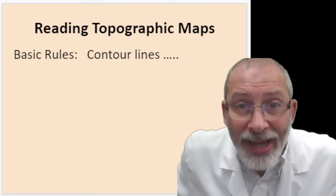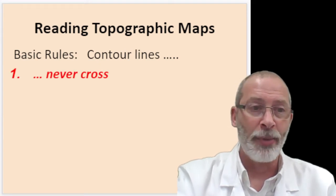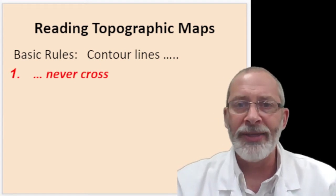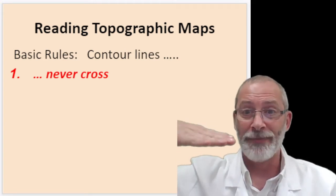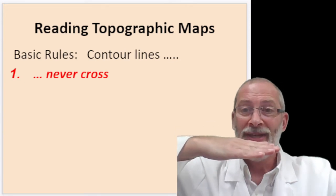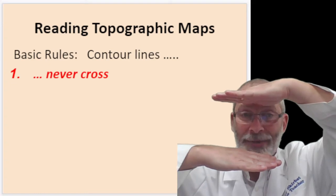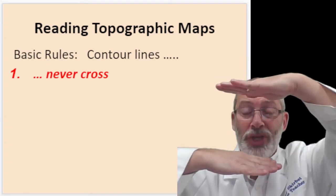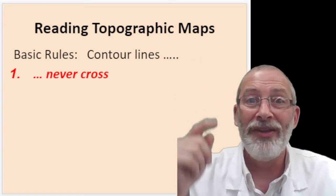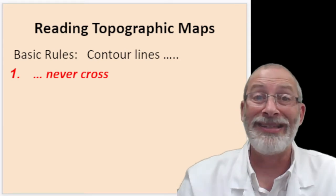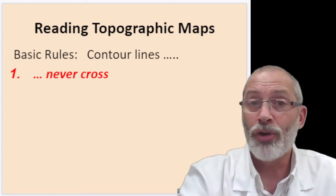Let's go over some basic rules of contour lines. Rule number one: contour lines will never ever cross. The reason is that every contour line represents a different elevation. When creating a two-dimensional map of a three-dimensional area, you can't cross contour lines because you can't have one point on a map that is two elevations at the same time — it would be like standing on your roof and in your basement simultaneously.